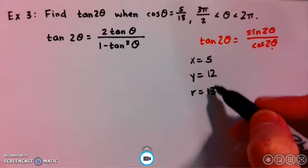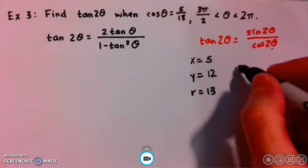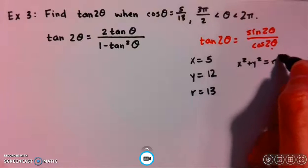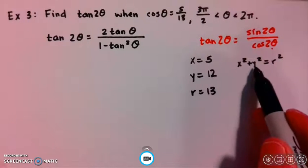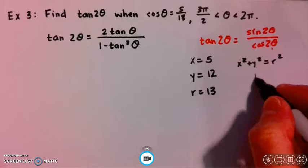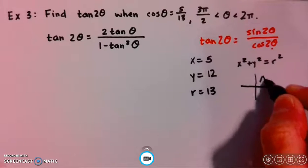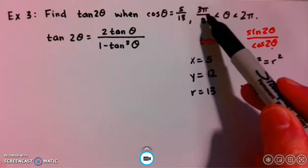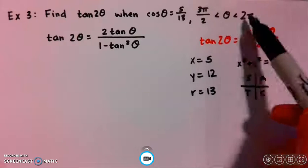If you don't remember how we got that, we can also just use x squared plus y squared equals r squared and find y. Let's think about what quadrant we're in using All Students Take Calc. Theta being between 3 pi over 2 and 2 pi tells us we're in quadrant 4.